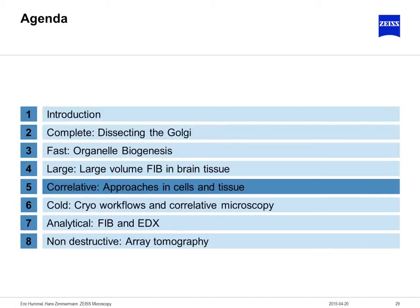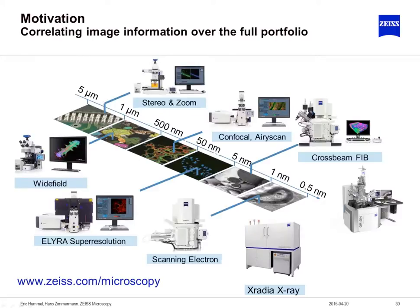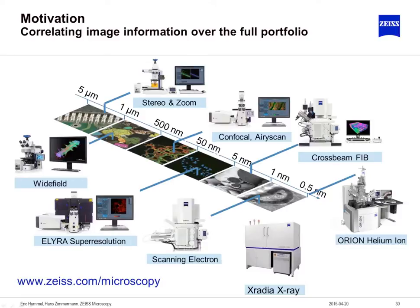All these workflows lead into the next topic: correlative microscopy. Correlative microscopy is something Zeiss can provide definitively, because we have the whole portfolio of light microscopy and electron microscopy imaging — starting from stereo and zoom microscopes, to widefield, to confocal microscopes, to super resolution systems, and our portfolio in crossbeam imaging and classical scanning electron microscopy. As a new addition, we also have the x-ray microscope, which can interconnect perfectly with our correlative systems, and in the high-end portfolio with the highest resolution, the helium ion microscopes.